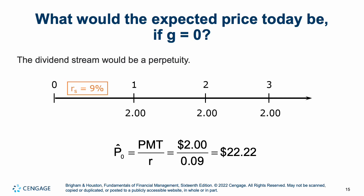What would the expected price be today if growth equals zero? If the stock isn't growing in terms of dividends — just a constant dividend — you treat it just like a perpetuity. You simply divide your payment by the return of 9%, and you would get $22.22. So if the dividends aren't growing and the stock just pays a flat $2 dividend every year, you treat it as a perpetuity and get $22.22.